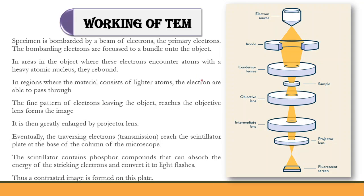In TEM operation, the specimen is bombarded by a beam of electrons. The electrons are focused onto the object and pass through multiple electromagnetic lenses. The beam passes through solenoids — tubes wrapped in coils — and interacts with the screen. One key difference: in TEM the sample is positioned in the middle of the column, whereas in SEM it is at the bottom, because in TEM the electrons must pass through it.